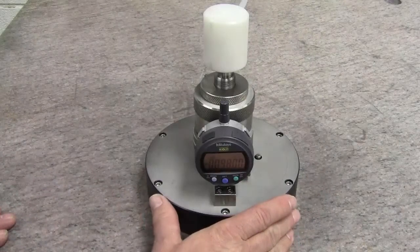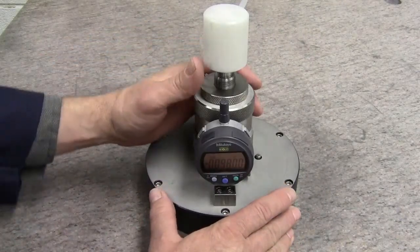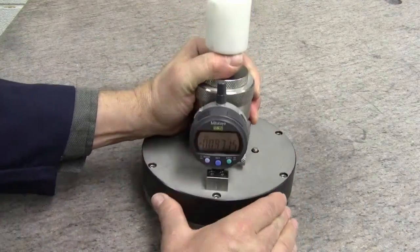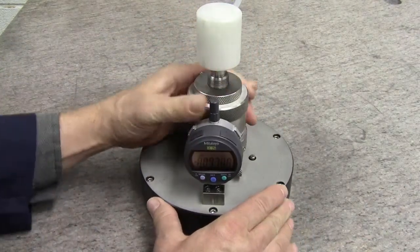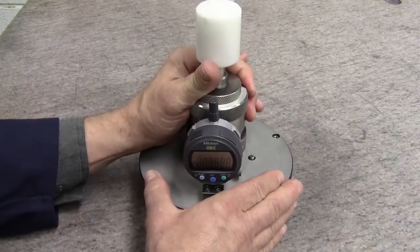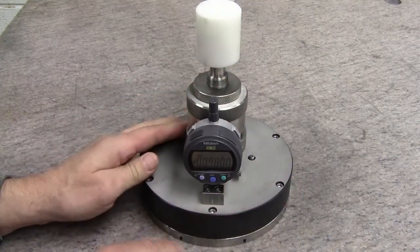The first step in setting up an AccuPaw is to zero out the chuck against a known flat surface, which in this case is a granite surface plate. We back off the lock rings so that when we lift it up we can feel it make contact with the granite plate.